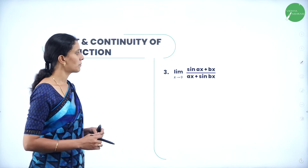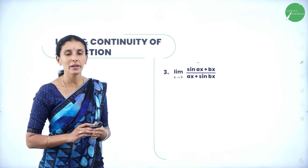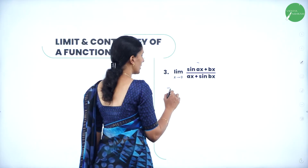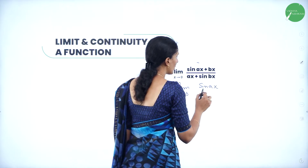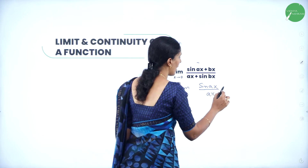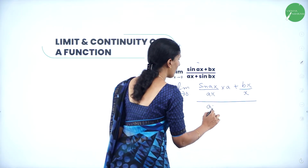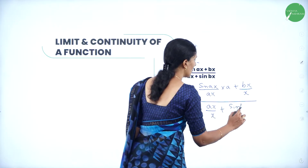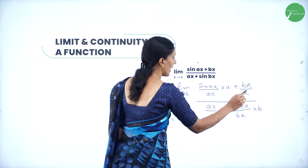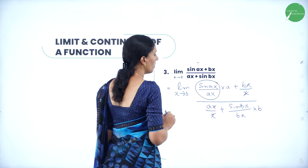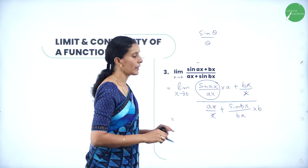Next question: limit of (sin ax + bx) / (ax + sin bx) as x→0. For sin ax, since the denominator contains ax, I will write ax in the denominator and multiply by a. Then I'll divide by x. For the denominator, I'll divide by x and for sin bx divide by bx and multiply by b. Now if you apply the limit separately, x and x cancel — this is of the form sin θ / θ, so sin ax / ax tends to 1 as x→0.